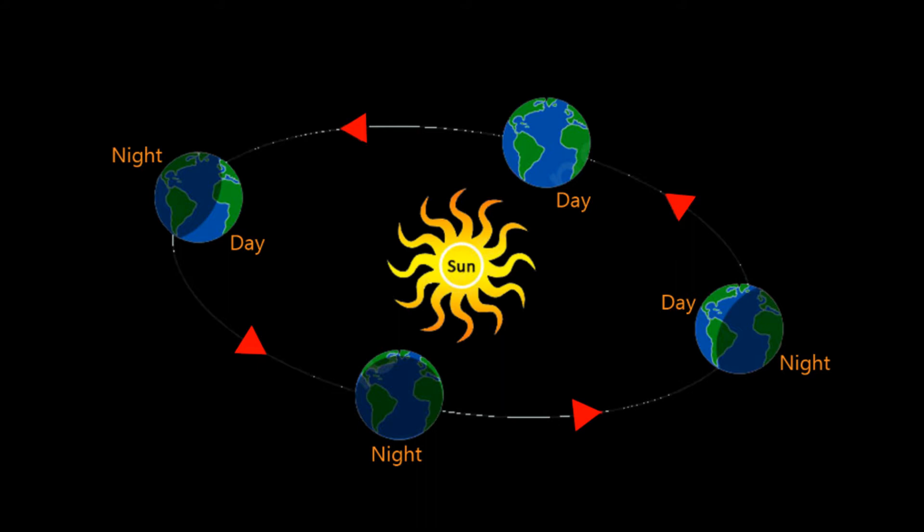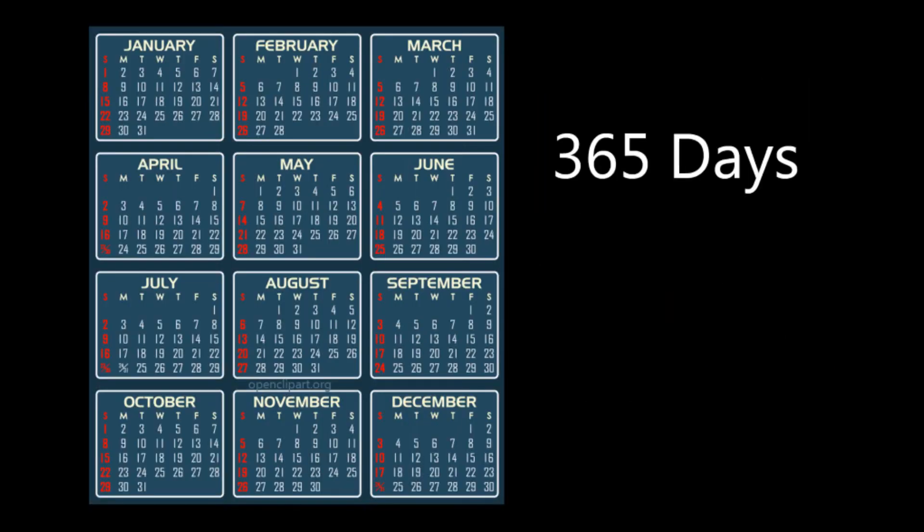While rotating on its own axis, Earth also rotates around the Sun. This movement is called revolution, and it produces a 365-day year.